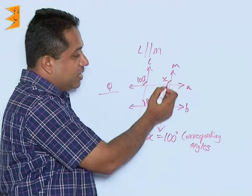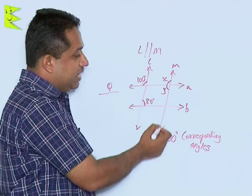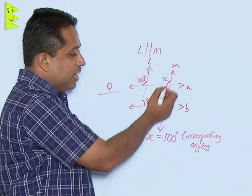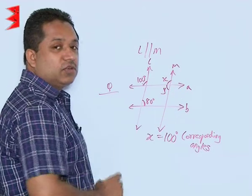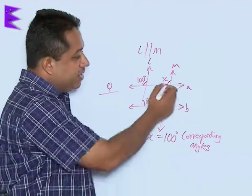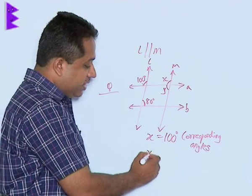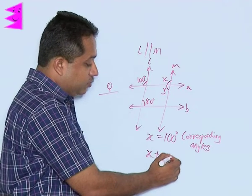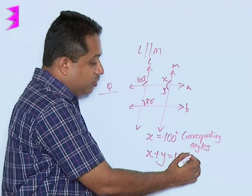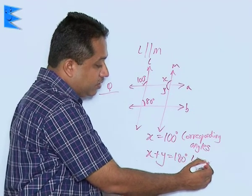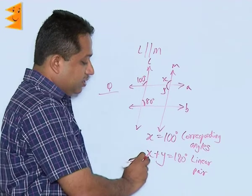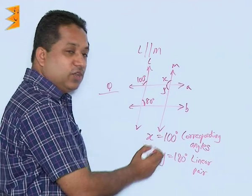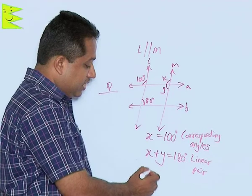Here, x and y are lying on a straight line on this line M. We know that when two angles lie on a straight line, that is called a linear pair, and a linear pair total will always give us 180. So we can say that x plus y is equal to 180. We are using the linear pair property, and we will substitute the value of x, which we have already found out to be 100.